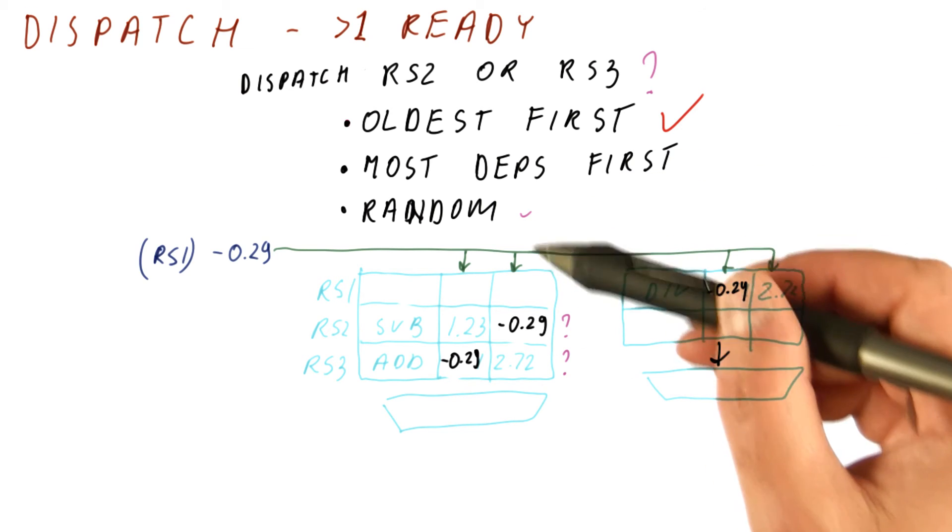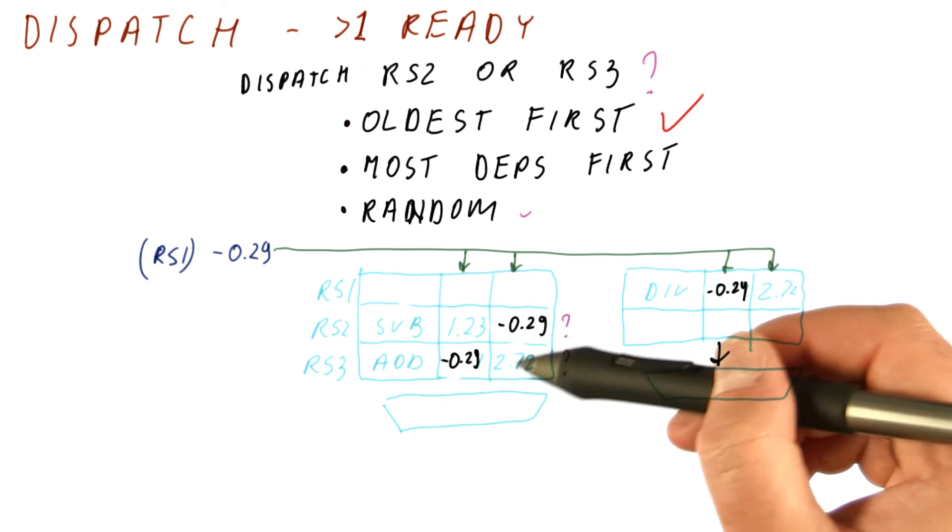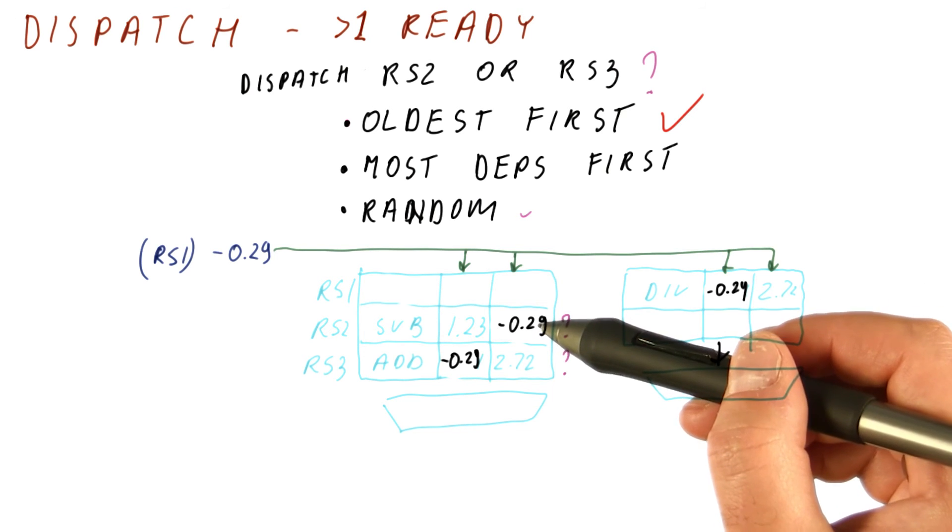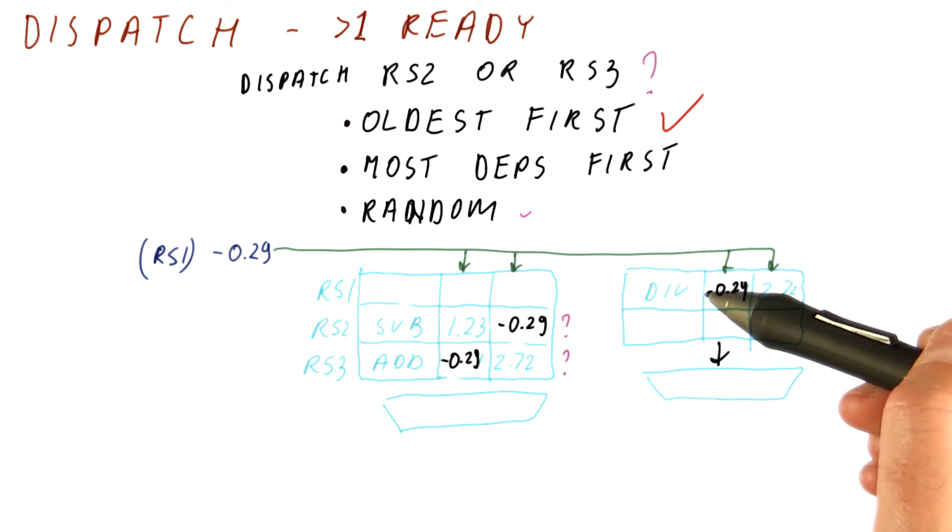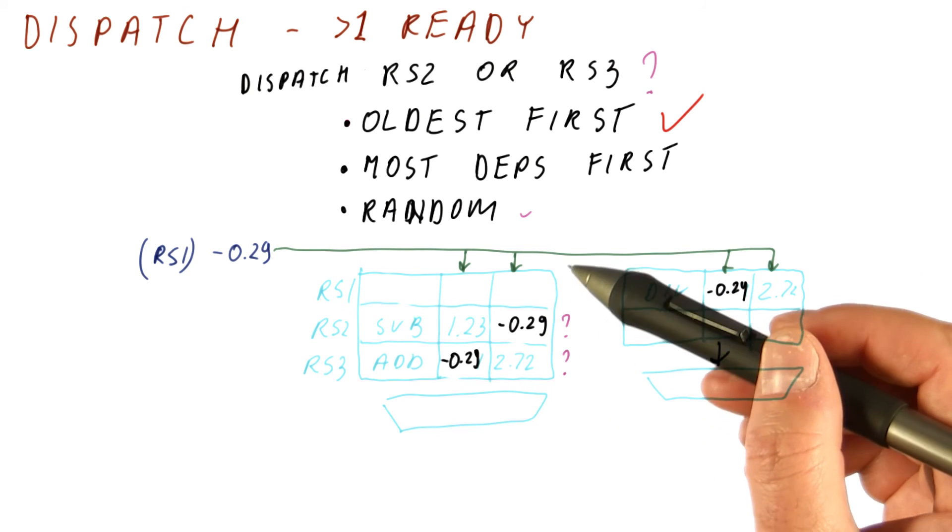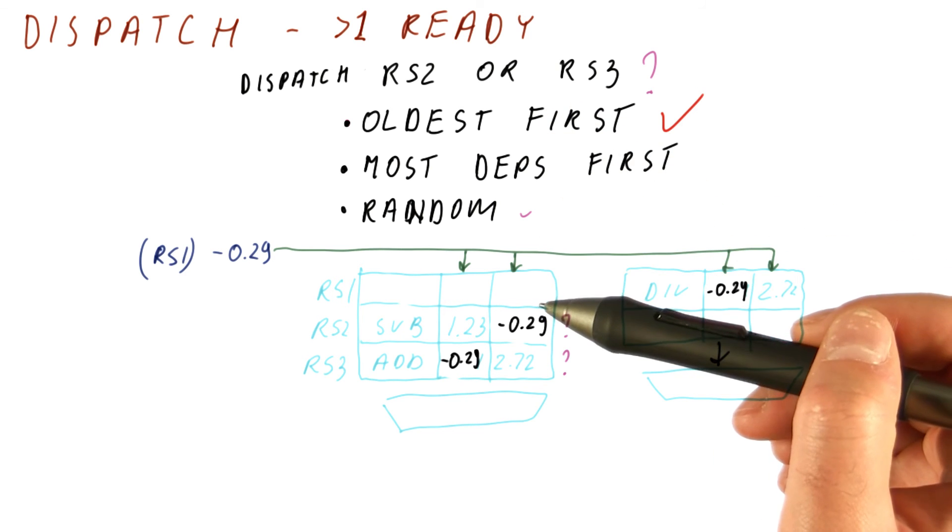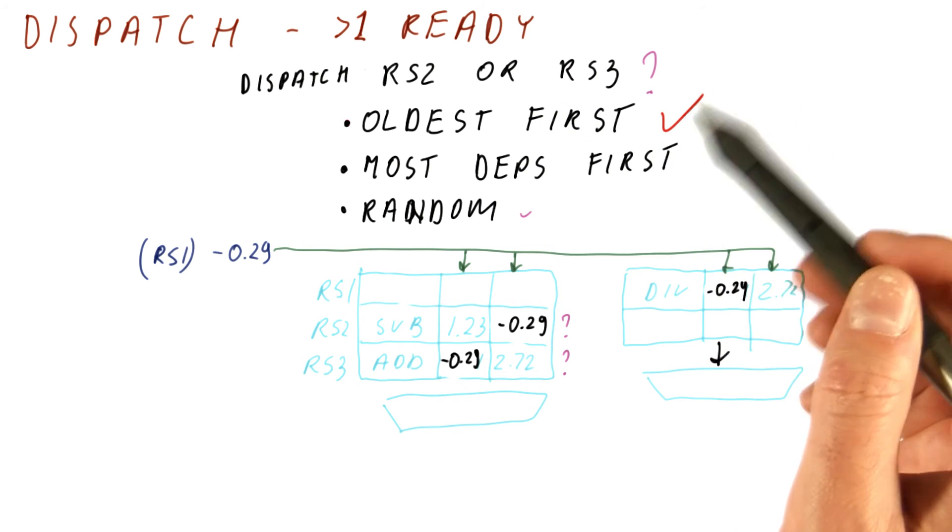This strategy would also work because if we don't send the oldest first, we will eventually run out of things to do because all of the things will depend on the oldest instruction, at which point it will run. So basically, it's not a problem regarding correctness if we choose something other than oldest first or dependence first. It's just an issue of what works reasonably well.